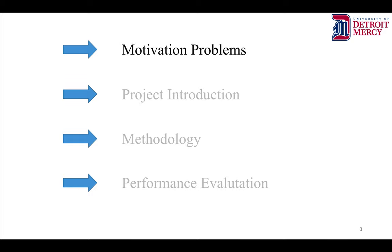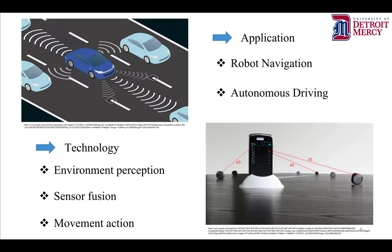First, we go to see the motivation problems. The applications for this project are robot navigation and autonomous driving. The technologies used in robot navigation and autonomous driving include environment perception, sensor fusion, and movement action. These are widely used in industry and research.